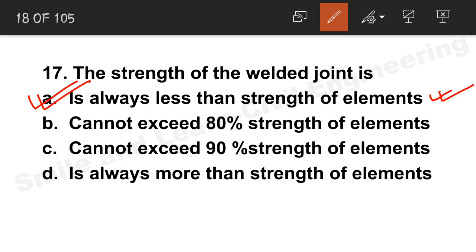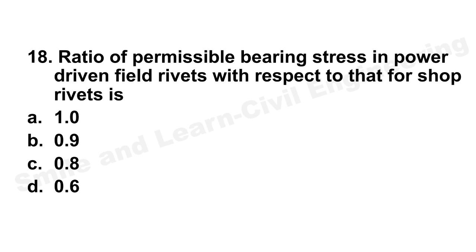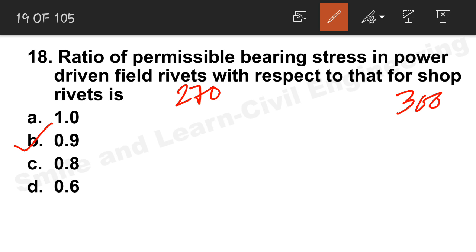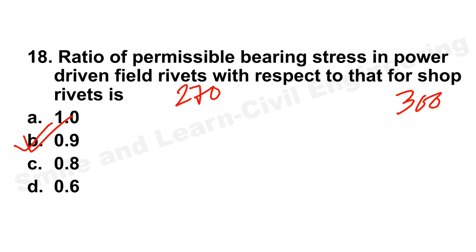Question 18: The ratio of permissible bearing stress in power-driven field rivets versus shop rivets. For field rivets it is 270 and for shop rivets it is 300. The ratio gives option B — 0.9 — as the correct answer.